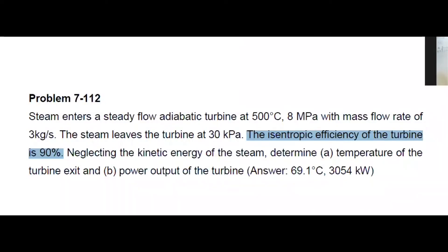Okay, so we have steam on an adiabatic turbine. We have two properties for the initial state, so that's completely defined for us. We have a mass flow rate as well, and then it leaves the turbine at 30 kPa. So we have the pressure for the leaving steam. Isentropic efficiency is 90%, and then neglecting the kinetic energy of the steam, determine the temperature at the exit and the power output of the turbine.